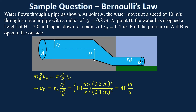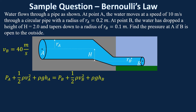With that velocity, we can use Bernoulli's Law. We can set the height at B equal to zero and cancel that term. Nothing else cancels, but we know everything: we're solving for PA, we know the velocity at A, the height at A is 2, the pressure at B is atmospheric pressure — 1.01 times ten to the fifth — and we know the velocity at B is 40. So everything is known except what we're solving for.